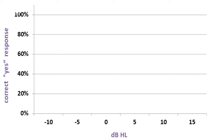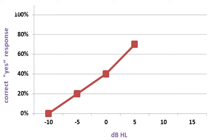We can now see what is the chance of that listener to hear a specific intensity. At minus 10, zero percent — we draw zero. At minus 5, two out of ten, so a 20% chance. At zero, four out of ten — 40%. At 5, seven out of ten — 70%. At 10, nine out of ten — 90%. At 15, ten out of ten — 100%; he always heard the stimulus whenever I presented 15. I draw these points and connect them.